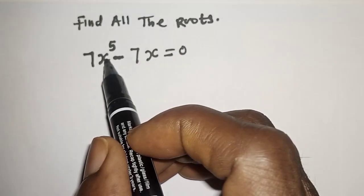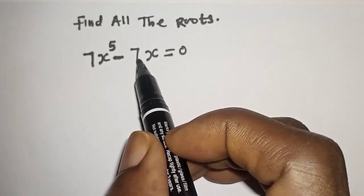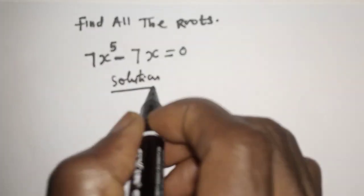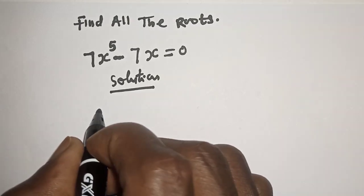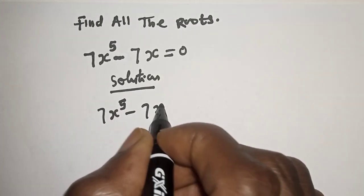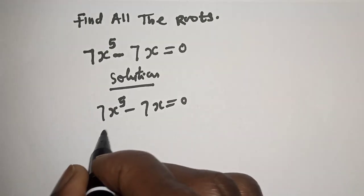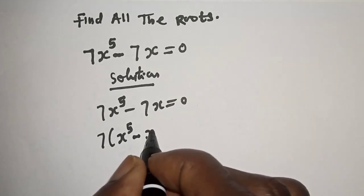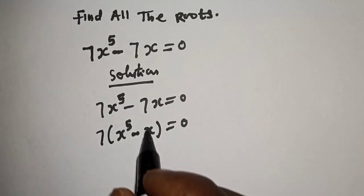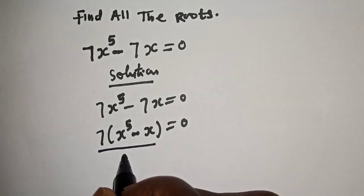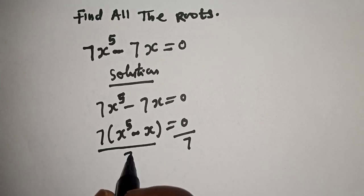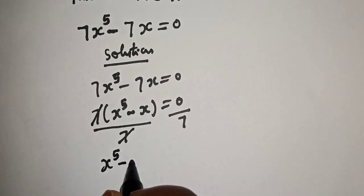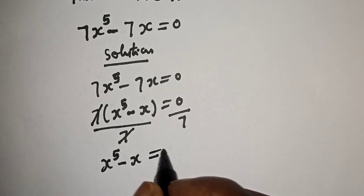Find all the roots: 7x raised to power 5 minus 7x is equal to 0. We have 7x raised to power 5 minus 7x equals 0. Now 7 is common, so we bring it out: 7 bracket x raised to power 5 minus x is equal to 0. Then we divide both sides by 7, this cancels, and we have x raised to power 5 minus x is equal to 0.